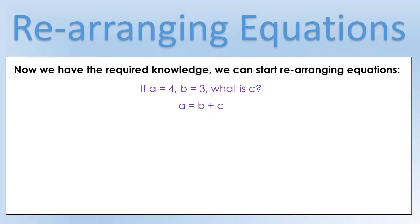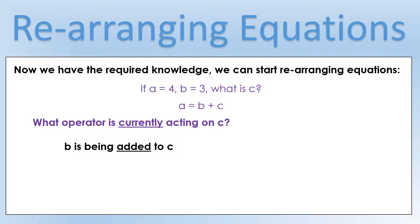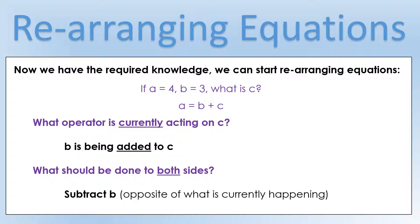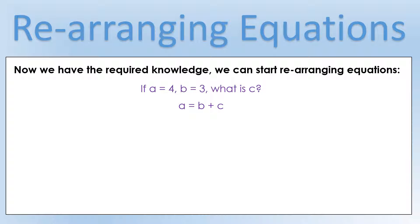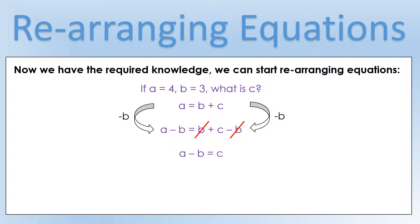How do we rearrange the equation? First, ask yourself: what operator is currently acting on c? In this equation, b is being added to c. Next, ask what we should do to both sides — we do the opposite, so we subtract b. That's why we needed to know the inverses. We subtract b from both sides: on the left we get a minus b, on the right we have b plus c minus b. The b's cancel each other out — b minus b gives nothing. So we end up with c equals a minus b.